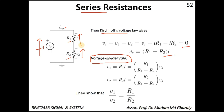Using the voltage divider rule, the voltage across R1 is V1 equals R1 over (R1 plus R2) times Vs, and V2 equals R2 over (R1 plus R2) times Vs. Therefore V1 over V2 equals R1 over R2.